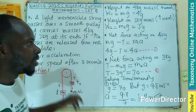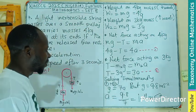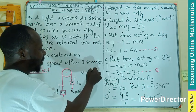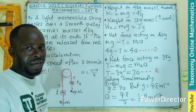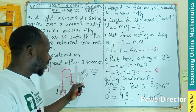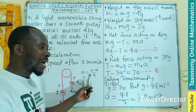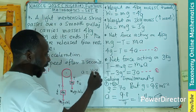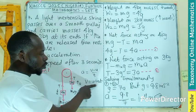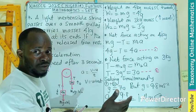Now for the second part of the question — finding the speed after three seconds. We can use the equations of motion. The acceleration is the change in velocity over time. Using the first equation of motion: v = u + at. The initial velocity u is zero since the bodies are released from rest.